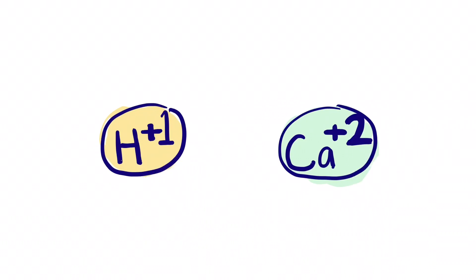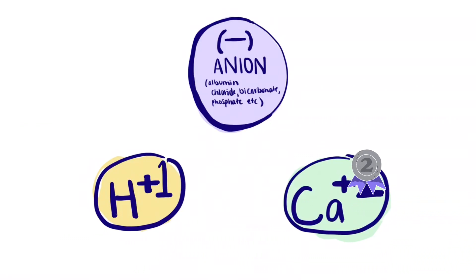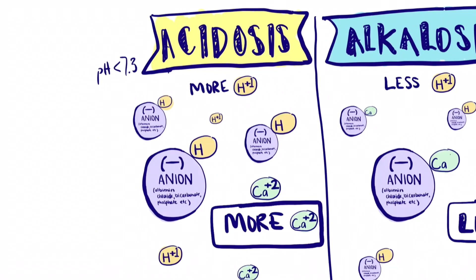Anytime there's an anion, hydrogen gets first priority on it and calcium is second priority. So in acidosis, where hydrogen and calcium can both compete for bonding with the anion, hydrogen is first in priority. This kicks off the calcium, so there's more ionized calcium (plus two) in the serum.